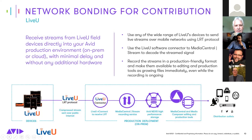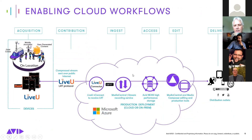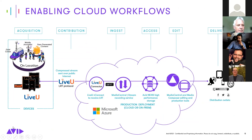At a high level, the workflow looks like this: you start with any LiveView unit sending over commodity internet or bonded cellular, then to a LiveView connector sitting as part of the receive unit, which hands off SRT to Media Central Stream, writes it to Avid Nexus, and makes it available to Media Composer and Media Central Cloud UX, either on-prem or in the cloud. You can then publish to social media, digital platforms, or deliver to a linear platform.